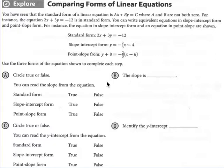First we're going to take a look at these equations here. You have standard form, slope-intercept, and point-slope. I'm asking you to circle true or false for these. For the first one, can you find the slope of the equation in standard form? In this case, you would have said false, because standard form is A times X plus B times Y equals C. Nowhere in there do you see M — it is not given to you right off the bat.